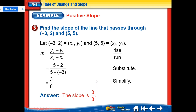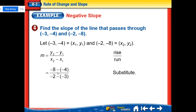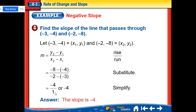For a negative slope example with points (-3, -4) and (-2, -8): we set up x1, y1 and x2, y2, so the numerator is negative eight minus negative four, and the denominator is negative two minus negative three. The double negatives give us negative eight plus four over negative two plus three, which is negative four over one, or just negative four. This means we go down four and over one to get from one point to the other.